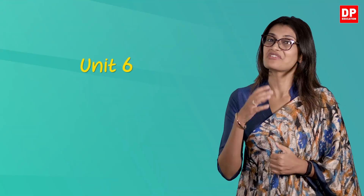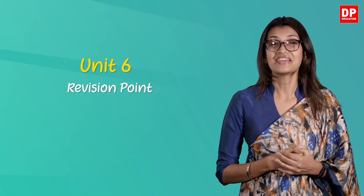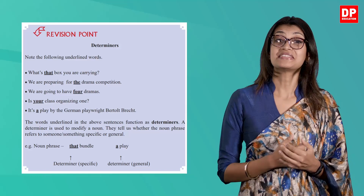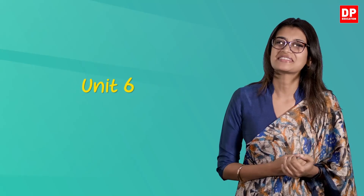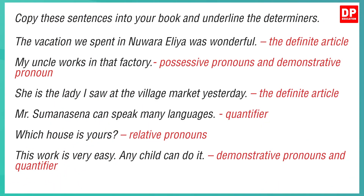Let's now look at Unit 6 revision point in your pupil's book on page 60. They have introduced you to some determiners and have even given some examples towards the end of the note. Let's turn to page 61, activity 3, and do the exercise together. Copy these sentences into your book and underline the determiners. The vacation we spent in New Aurelia was wonderful. My uncle works in that factory. She is the lady I saw at the village market yesterday. Mr. Sumanasena can speak many languages. Which house is yours? This work is very easy. Any child can do it.